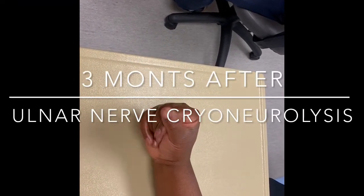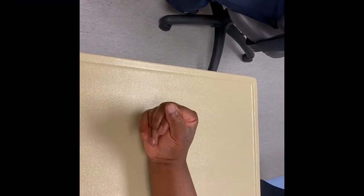We did a nerve block to the ulnar nerve with such success below the elbow that we immediately went on to do a cryoneurolysis.